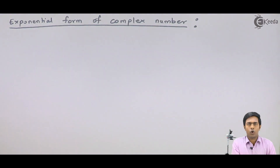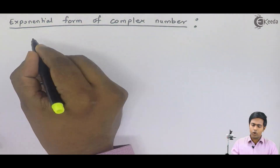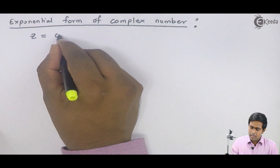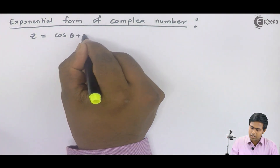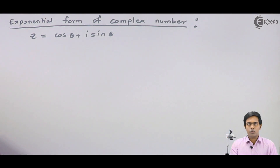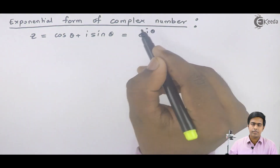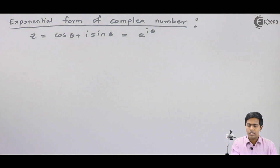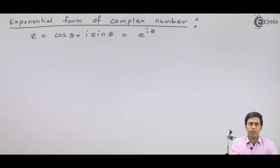Let us see some more problems based on exponential form of complex numbers. We have already seen that any complex number in Cartesian form or in polar form can be represented in exponential form. For example, cos θ + i sin θ is in polar form, and in exponential form we represent it as e raised to iθ. This concept is useful in problems where one complex number is in the base and another is in the power, and in such cases we use exponential form to find the power.